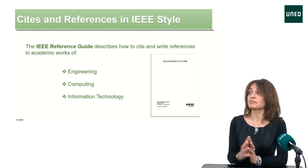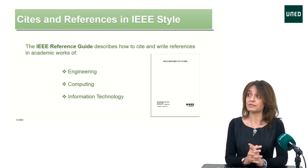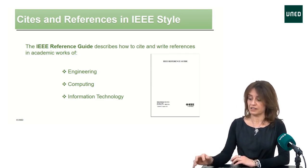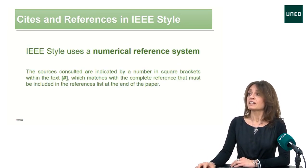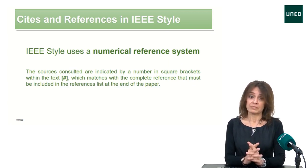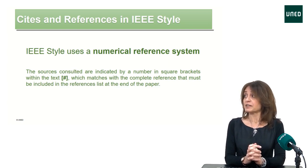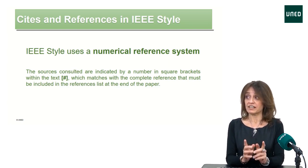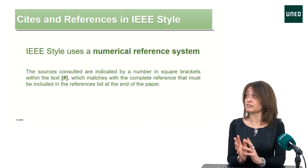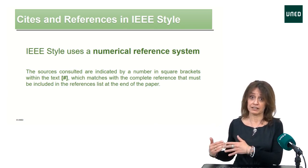The IEEE reference guide describes how to cite and write references in academic works of engineering, computing, and information technology. This style uses a numerical reference system as its main characteristic. The sources consulted are indicated by a number in square brackets within the text, which matches with a complete reference that must be included in the references list at the end of the paper.